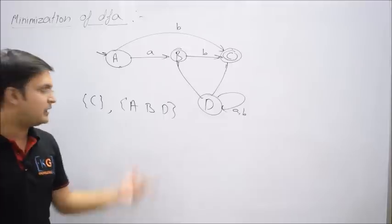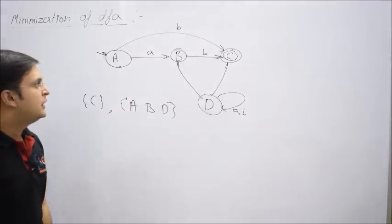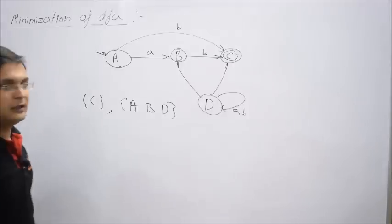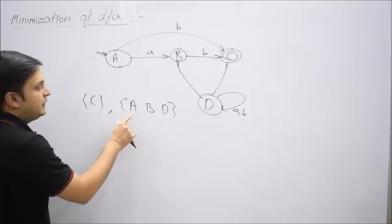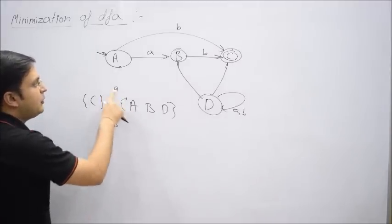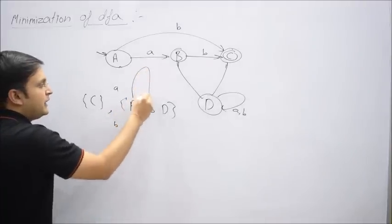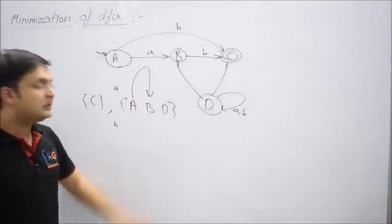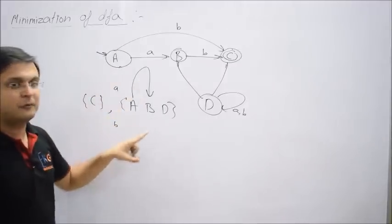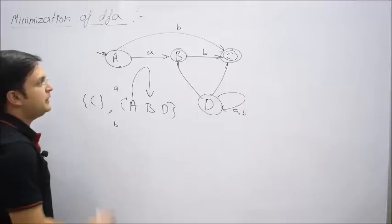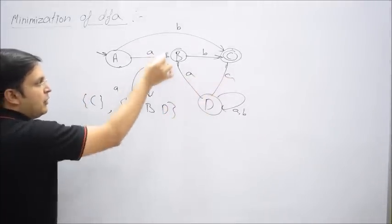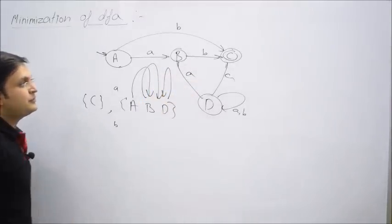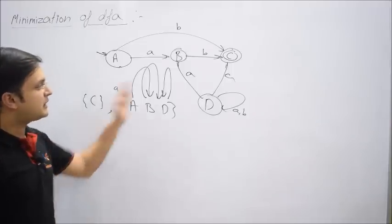Let's check the behavior of all three states on both symbols. There are only two symbols: a and b. Capital A on small a goes to B — it returns to the same group. Capital B on a goes to D — also the same group. And D on a also comes to the same group. Surprisingly, all three states have the same behavior when it comes to symbol a.